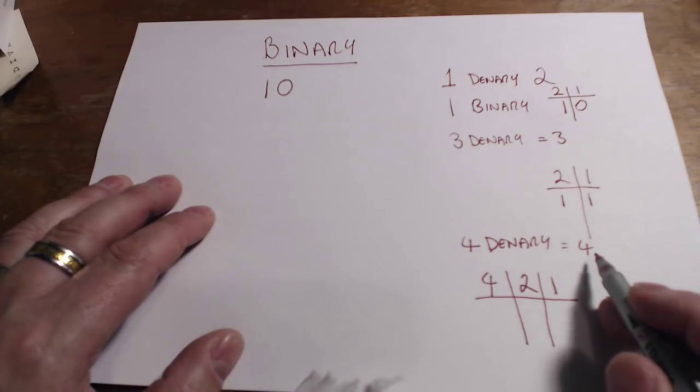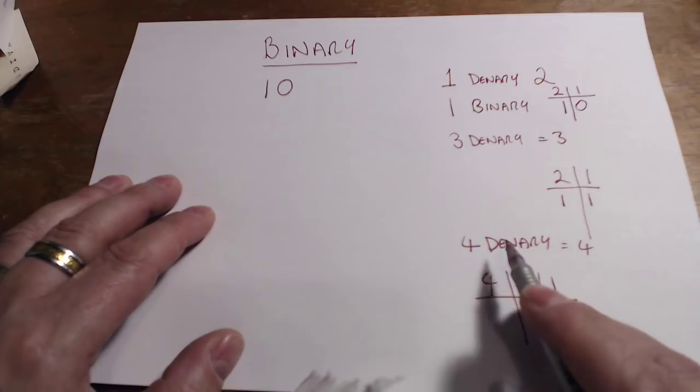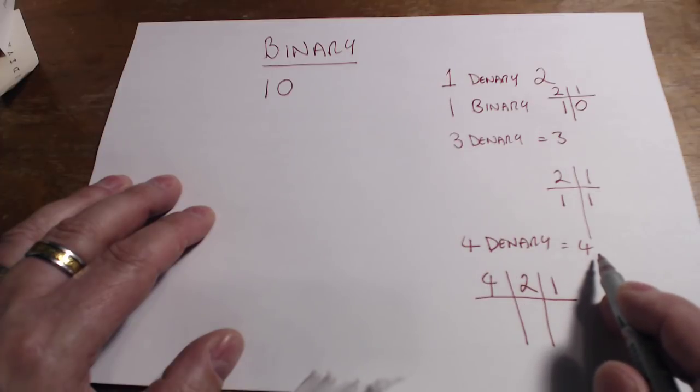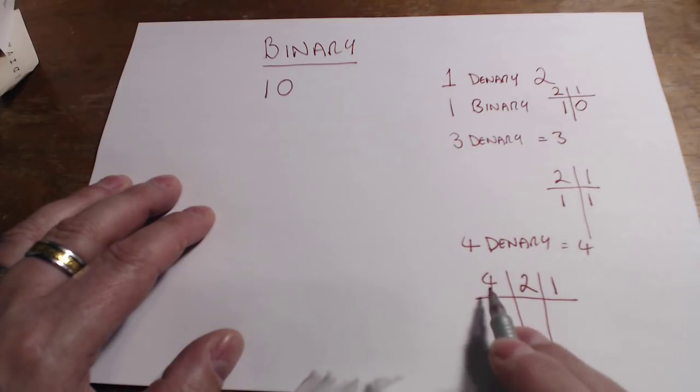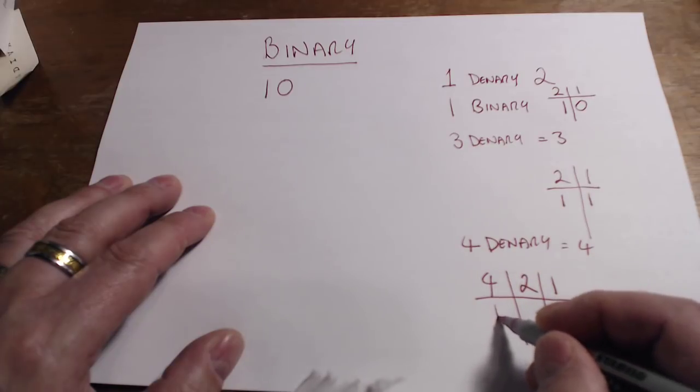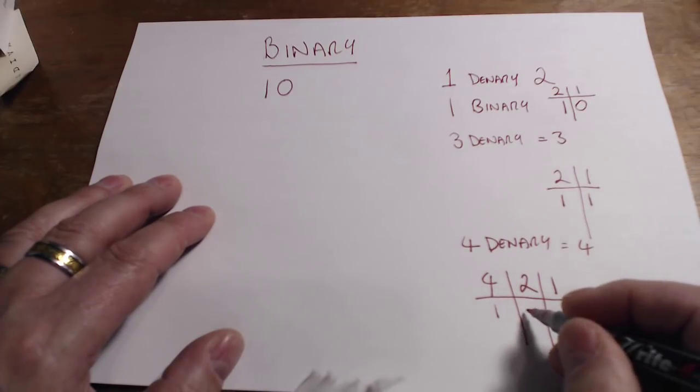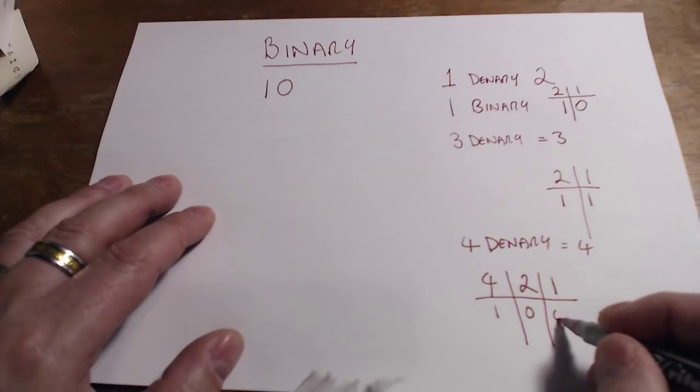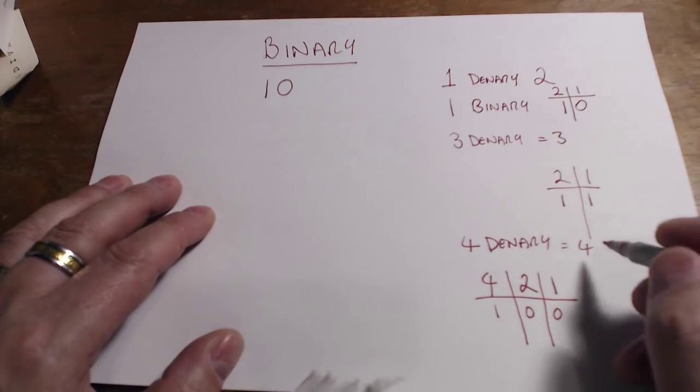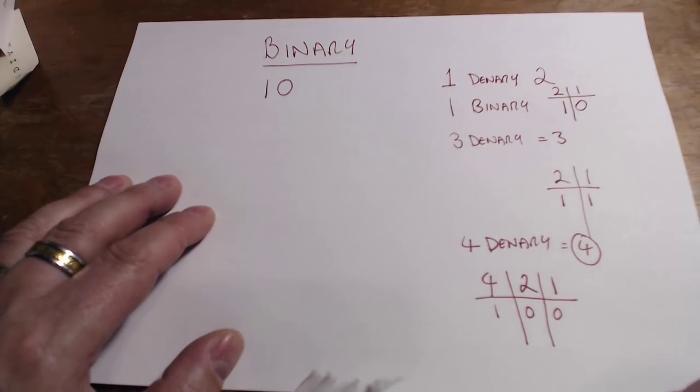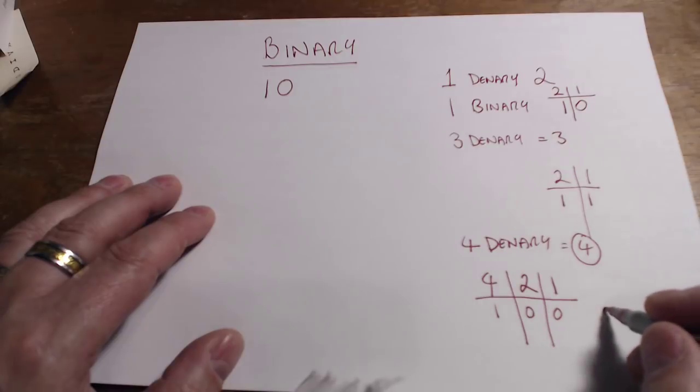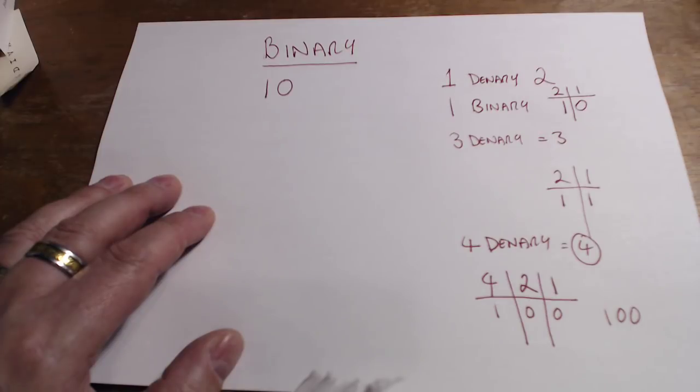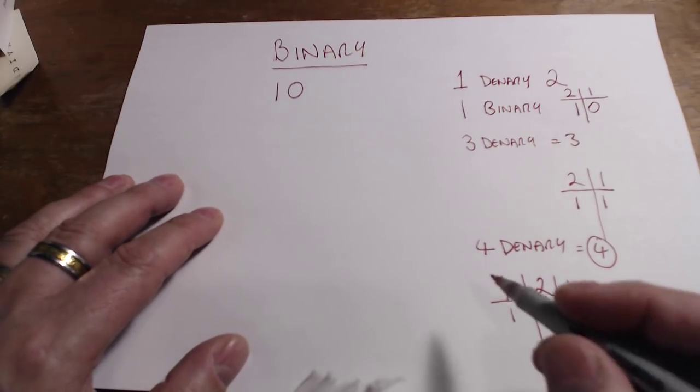Let's have a look at this. How many times does four go into four? Four goes into four once, of course. There's nothing left over, so I'll write zero zero. So the number four in denary in binary is actually the number one zero zero.